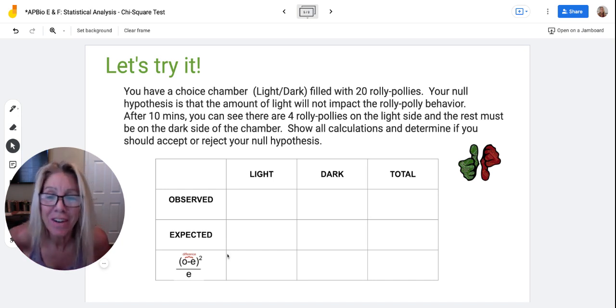Okay, so here we go. The first thing I would do is I would put what I expected down here. So if I had 20 roly-polies and light doesn't affect it, I'd expect 10 and 10 for a total of 20.